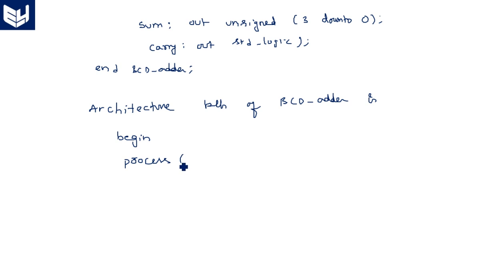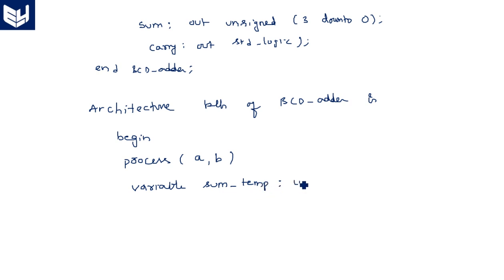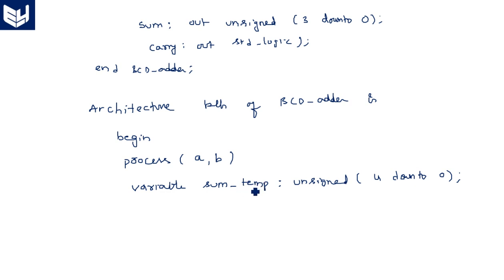Inside the architecture we write 'process(a, b)' — no semicolon here. In the process we list the input instances a and b. Then we declare a variable: 'variable sum_temp: unsigned(4 downto 0)'. We are taking a 5-bit temporary sum variable because it is changing its value for each input combination, and because when we add two 4-bit numbers the result may be a 5-bit number.